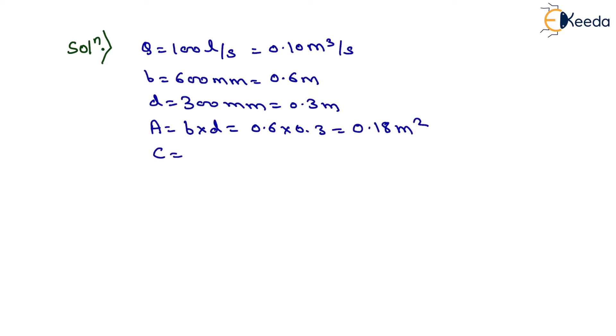Chagy's constant C is given as 56. Now we have to calculate the value of slope of bed, that is I.